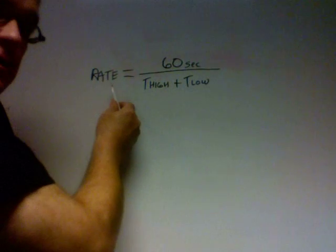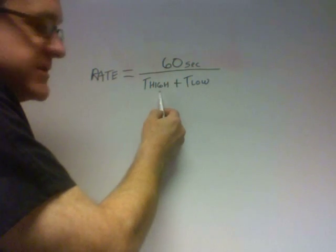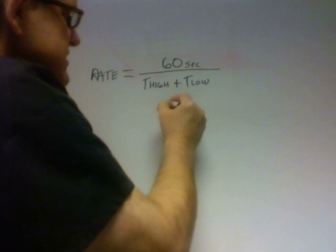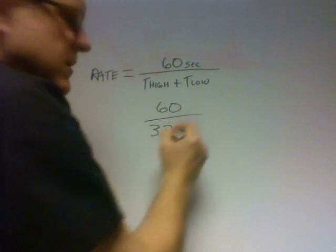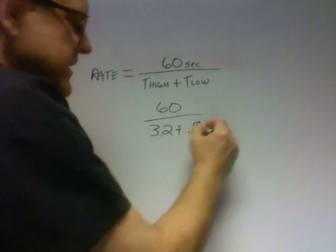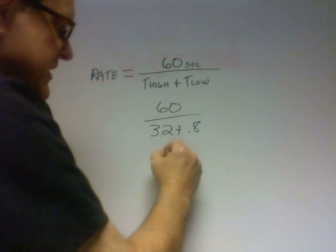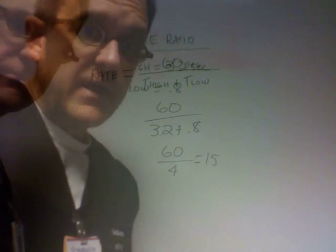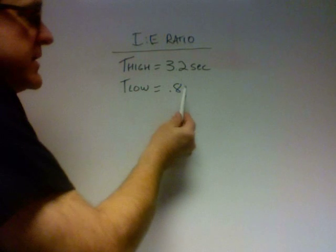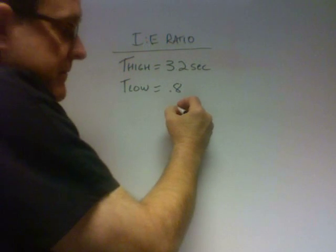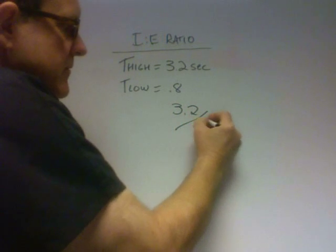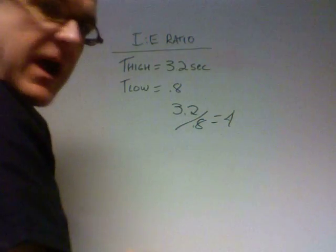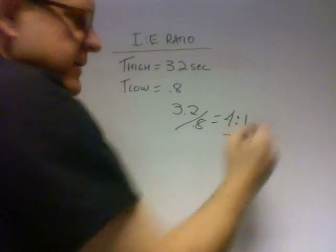I have the formula right here. Your rate is equal to 60 seconds divided by time high plus time low. In our example, 3.2 seconds I-time plus 0.8 seconds E-time equals 4, so 60 divided by 4 equals a rate of 15. To get your IE ratio, simply divide 3.2 by 0.8, which equals 4 — so your IE ratio is a 4-to-1 inverse IE ratio.